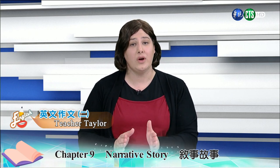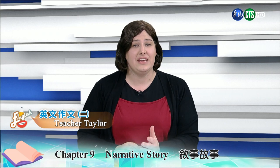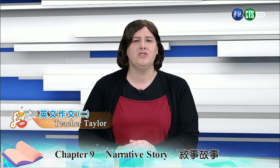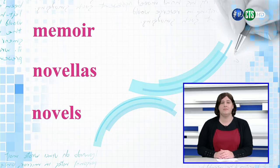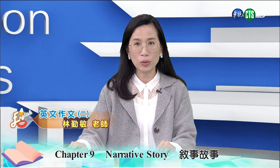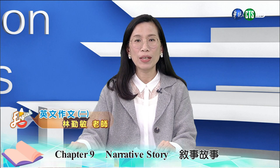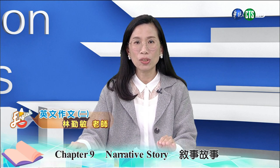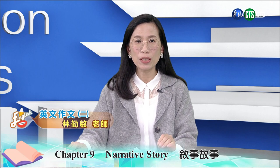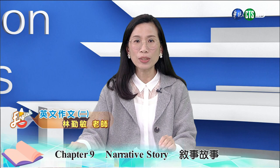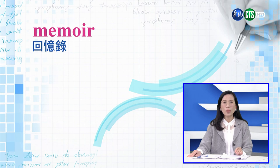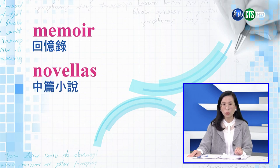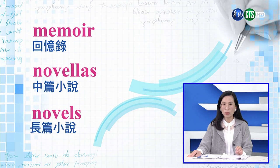When thinking of a topic for a narrative, come up with events that took place in a short period of time, such as arriving late to the airport, or a bad date. Stories that happened over several days might be better suited for a memoir, novellas, or even novels. 那我们要考虑叙述文的主题的时候,你要考虑的是在短时间内发生的事情。例如说,你到机场的时候迟到了,或者在一个糟糕的约会里面。那比较长的这些事呢,比如说发生好几天的这种事呢,可能比较适合写的是回忆录,或者是中篇小说novella,或者是长篇小说novels里面。